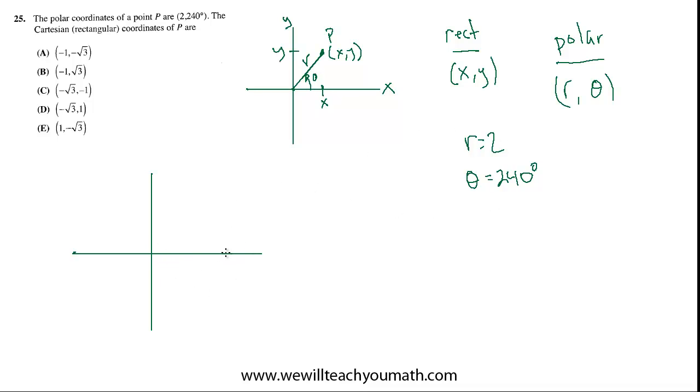If this is 0 degrees, 90, 180 unit circle, right? And this is 270, 180, 270. Then 240 is going to be 60 degrees past 180. So it's maybe right around here. That would be 240 degrees.